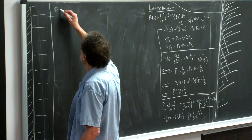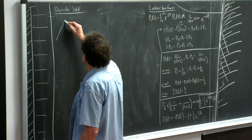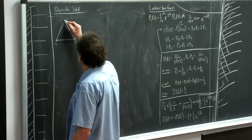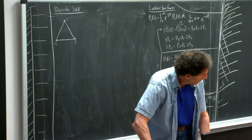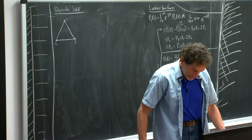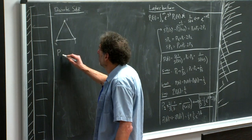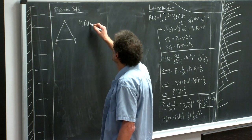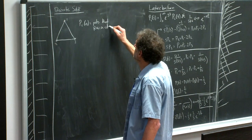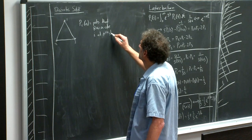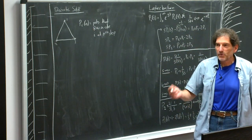Let's now do a discrete solution. I have my triangle — one, two, three. The basic quantity will be P_I(n): the probability that the random walk is on site I at the nth step. It's just the analog of P_I(t), with the time argument now being a discrete argument that changes by one every time I take a step.